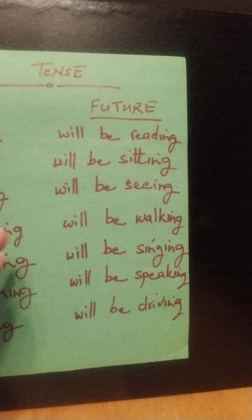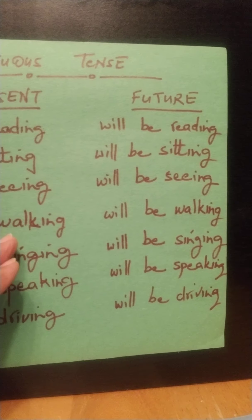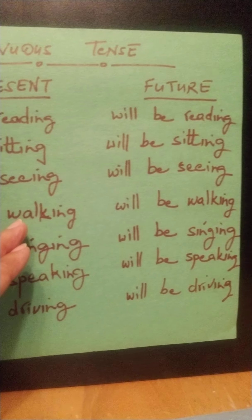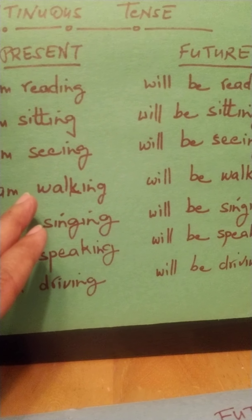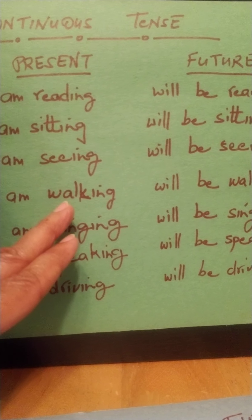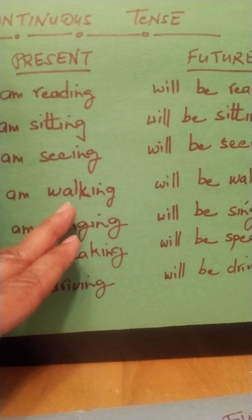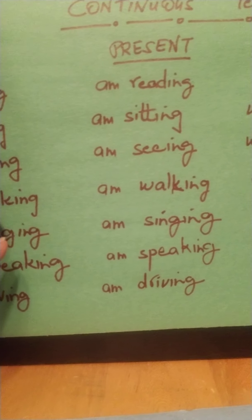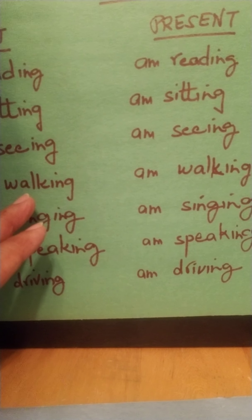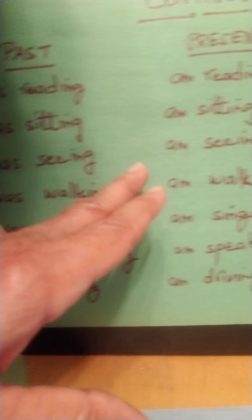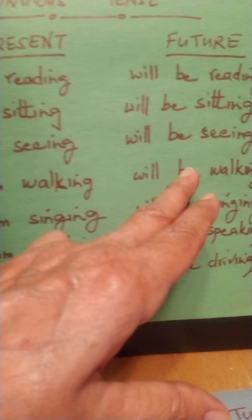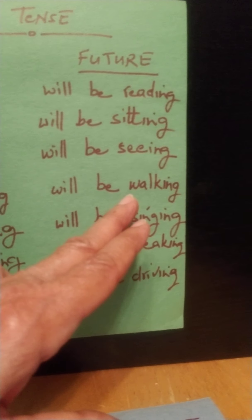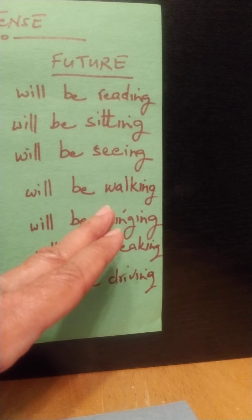Let's take another one: walking. I am walking. Oda past tense: I was walking. Oda bhavishya: I will be walking.